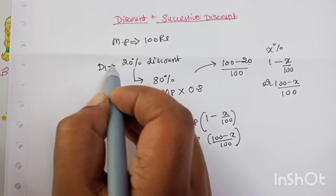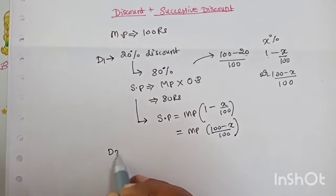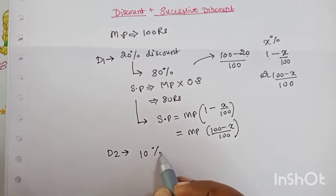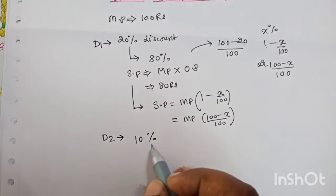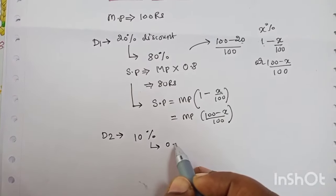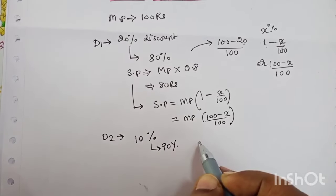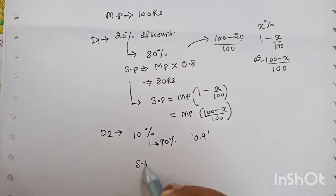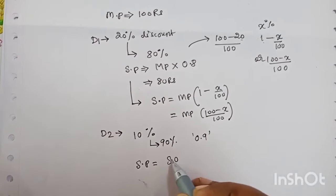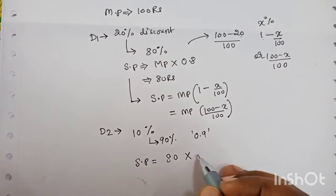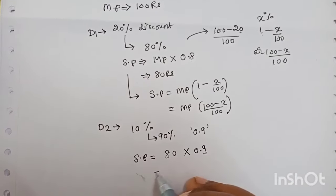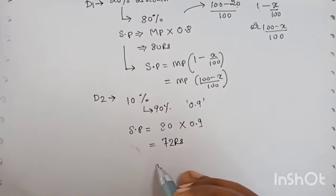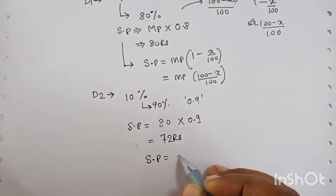Now if you give another discount — after giving 20% discount you give another 10% discount — that means now you have sold the product at 90% of the previous price, so you multiply by 0.9. The new selling price after the first discount was 80 rupees; multiply by 0.9 and you get 72 rupees. This is successive discount.